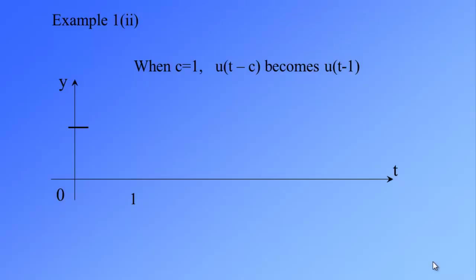Before t equal to 1, the value of y is equal to 0. Then the value of y shoots up to 1 and it continues this value. And this is the graph of u(t-1).